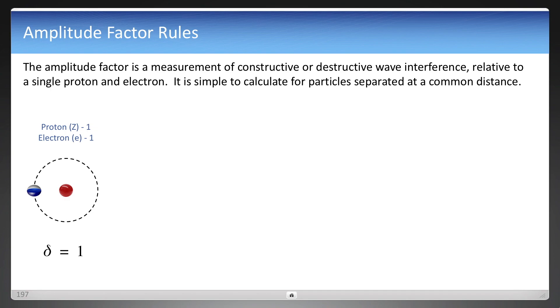So one proton, one electron is simply an amplitude factor of one. But ionized helium, which you see two protons in the middle, now is much more destructive on that single electron, and is therefore two.